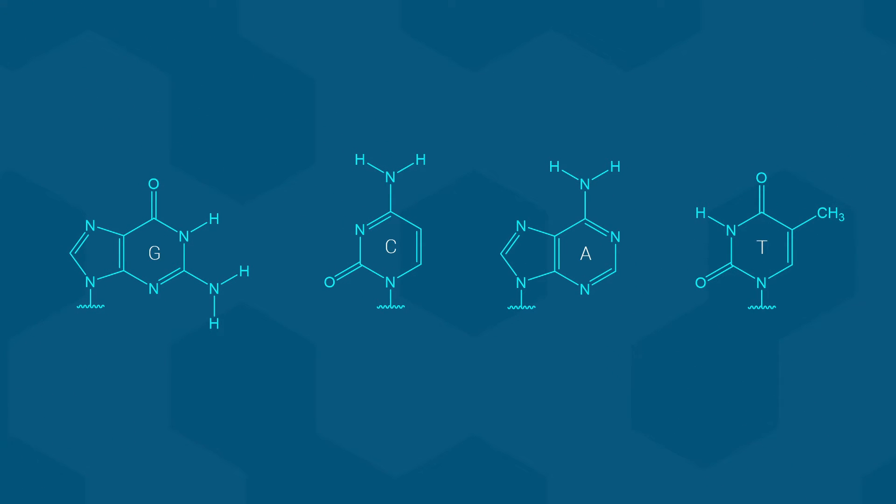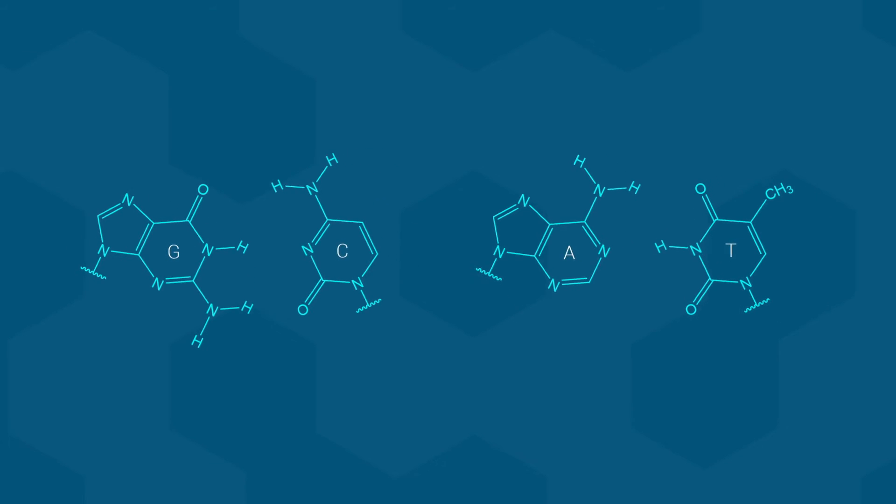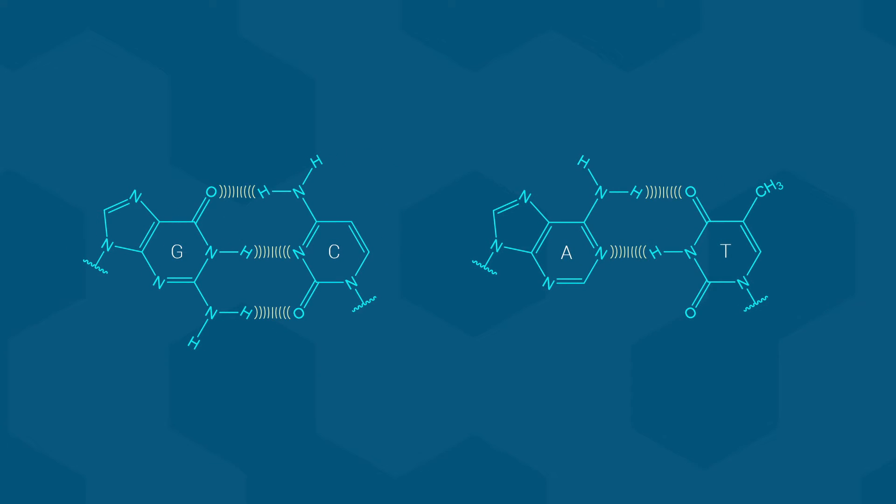As we have already seen, there are four distinct bases used in DNA, shown here with a bit more detail to their structures. Within DNA molecules, the bases pair up in an extremely specific manner. As you likely already know, G and C form a base pair, as do A and T.